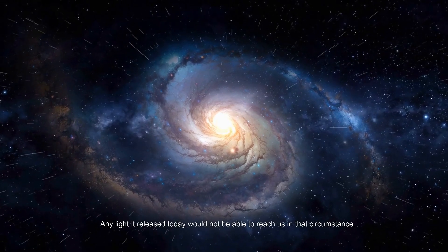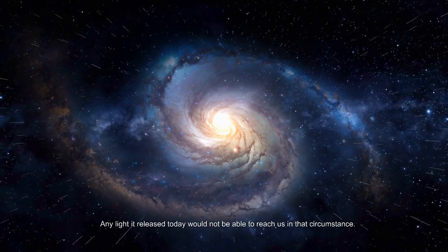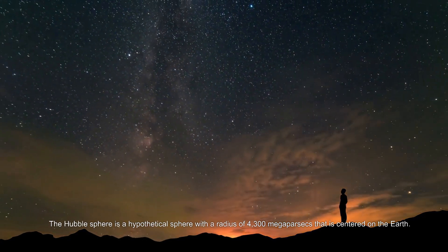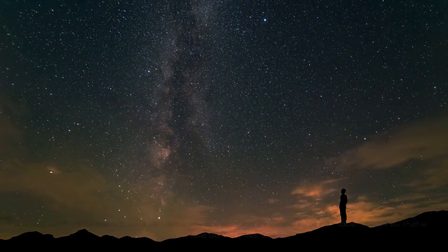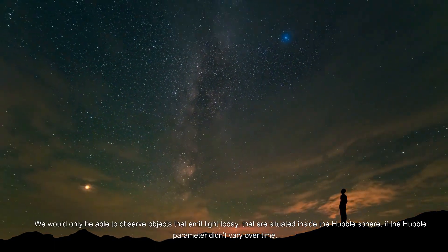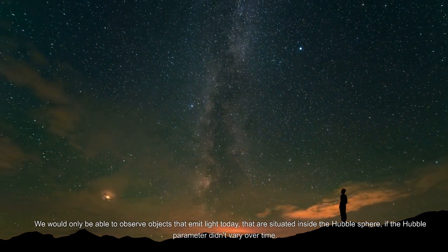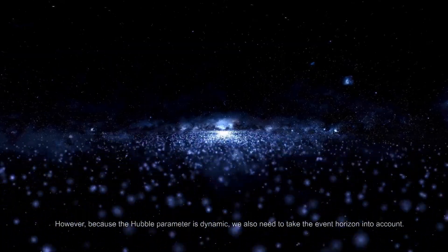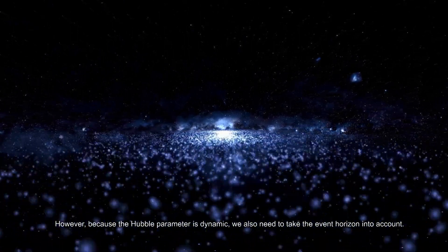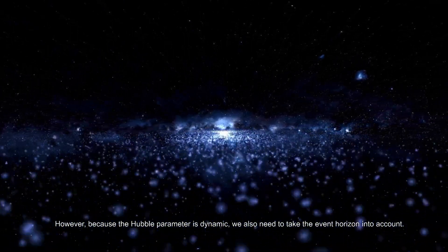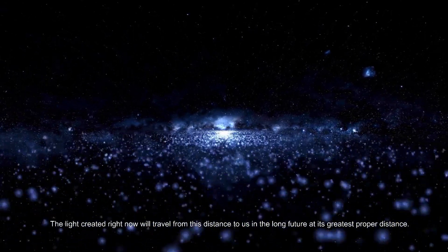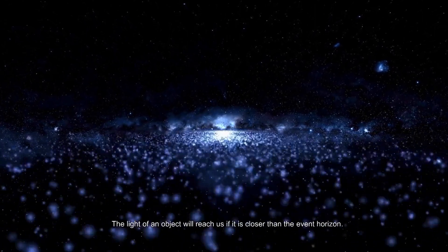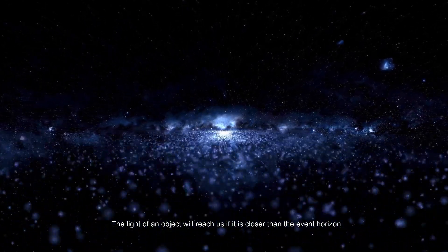Assuming that Hubble's law is applicable at all distances, meaning at all points in the past, any light it released today would not be able to reach us in that circumstance. The Hubble sphere is a hypothetical sphere with a radius of 4,300 megaparsecs that is centered on the Earth. We would only be able to observe objects that emit light today that are situated inside the Hubble sphere if the Hubble parameter didn't vary over time. However, because the Hubble parameter is dynamic, we also need to take the event horizon into account. The light emitted right now will travel from this distance to us in the long future at its greatest proper distance.